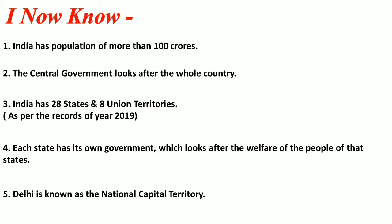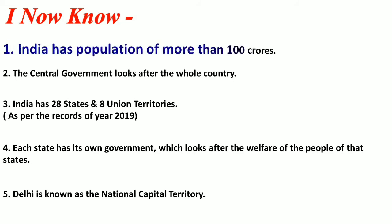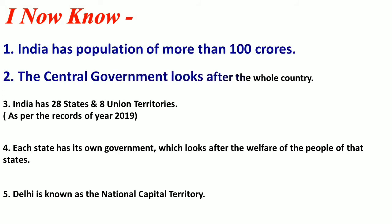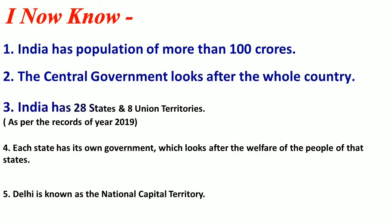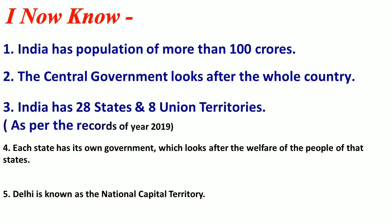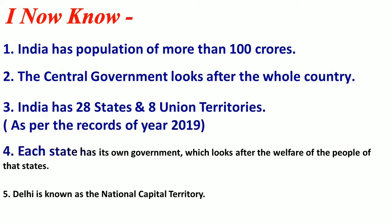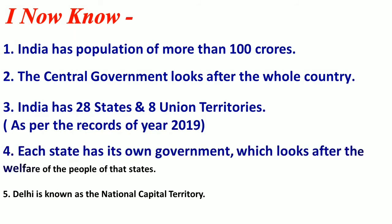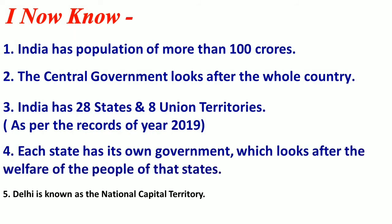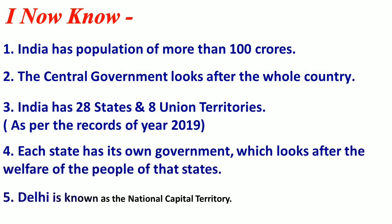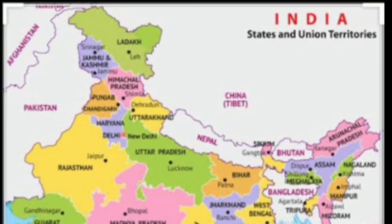Now we know that India has a population of more than 100 crores. The central government looks after the whole country. India has 28 states and 8 union territories. Each state has its own government which looks after the welfare of the people of that state. Delhi is known as a national capital territory. I hope that you understood the chapter well. After this, we will learn about the different states and union territories of India and their capital cities.